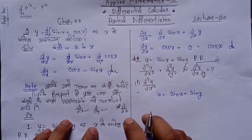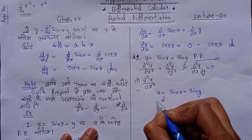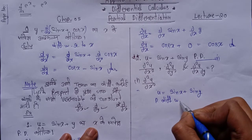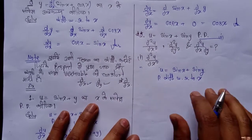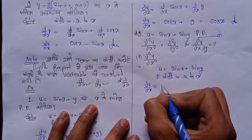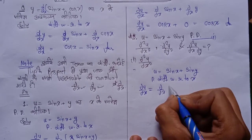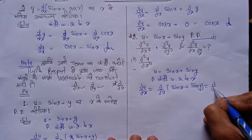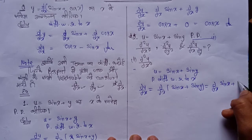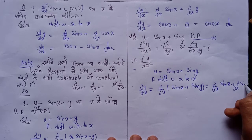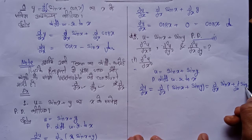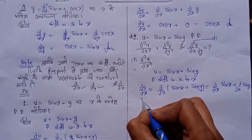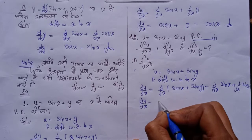So first we solve partial differentiation with respect to x. We have u = sin x + sin y. Differentiating with respect to x: ∂u/∂x = ∂/∂x of sin x + ∂/∂x of sin y. Now, since we are differentiating with respect to x, sin y is a constant — so its derivative is 0. And the derivative of sin x is cos x. Therefore, ∂u/∂x = cos x.